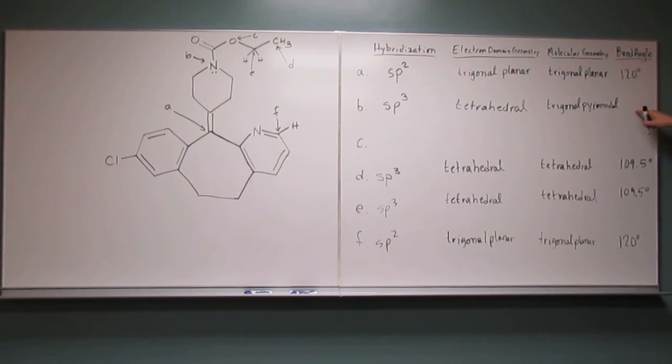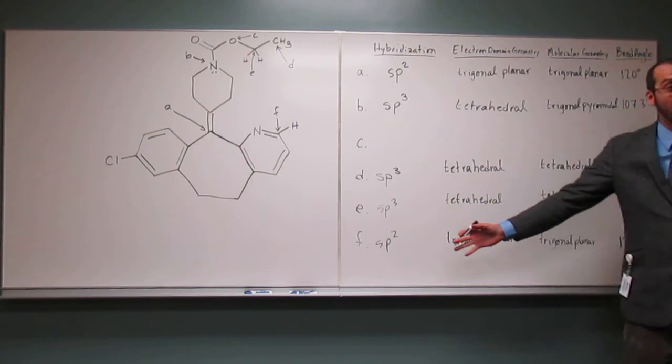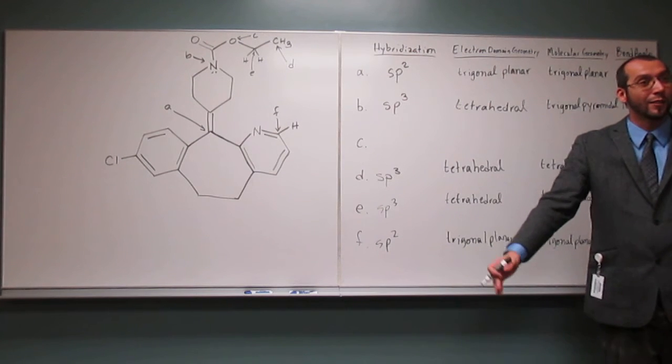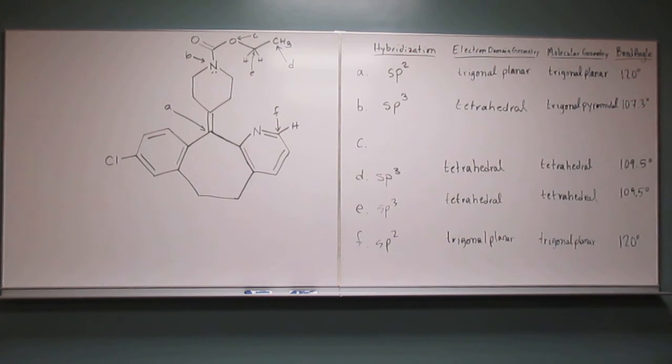Okay, and then the bond angle, what is that going to be? 107.3. 107.3, right? So that's going to be just less than 109.5. So why would it be less than 109.5? With the pair of electrons. The lone pair, remember, it does what? Squishes those bond angles down. You're doing really good. You should be proud of yourself.